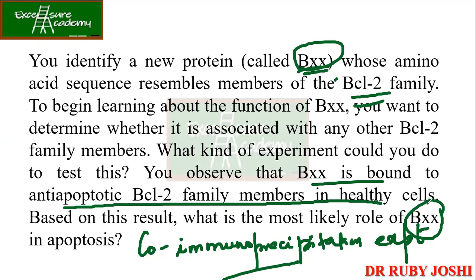Anti-apoptotic proteins like BCL2 inhibit BXX in the case of healthy cells. If the activity of BXX is not inhibited, the healthy cell would not survive.